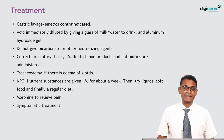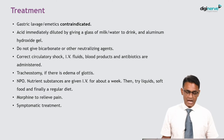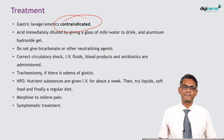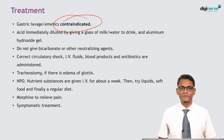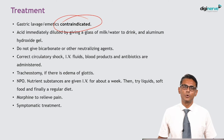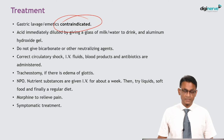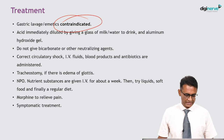How to treat such cases? Gastric lavage and emetics are contraindicated — you are not going to perform gastric lavage in acid poisoning. The acid is immediately diluted by giving a glass of milk or water to drink, along with aluminium hydroxide gel. Do not give bicarbonate or other neutralizing agents, as bicarbonate will produce carbon dioxide which will further aggravate the condition. Correct the circulatory shock with IV fluids, blood products, and antibiotics. Tracheostomy is performed if there is edema of the glottis.